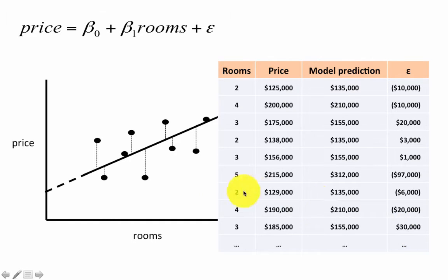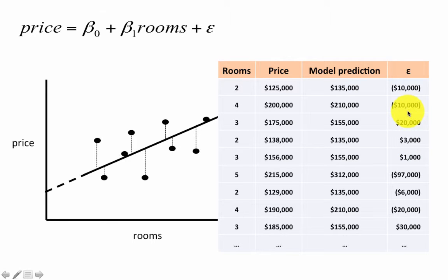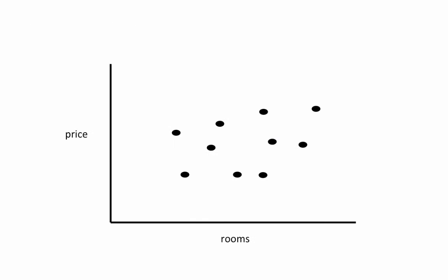What would it mean for the model to be a good model? If the model is very good, we would expect all these errors to be very small — ideally zero, meaning every predicted value exactly matches the actual value. The smaller the residuals, the better the model. Unfortunately, if we want to find the quality of the entire model, we cannot simply add up all residual values because some are positive and some are negative — they would cancel out, making a poor model look good.